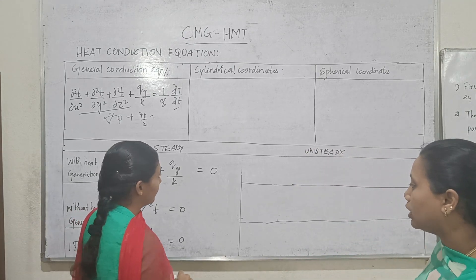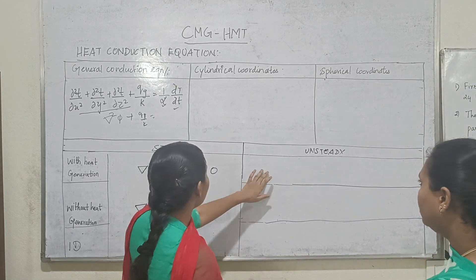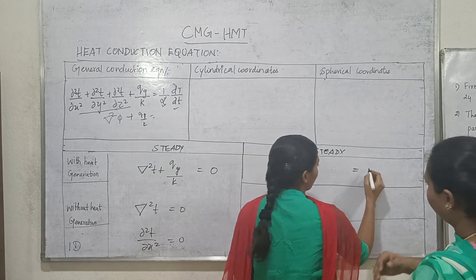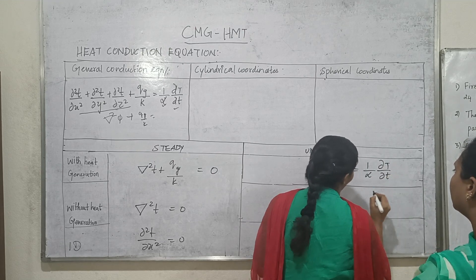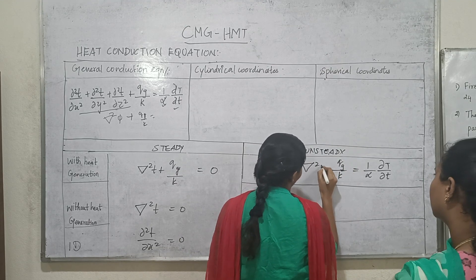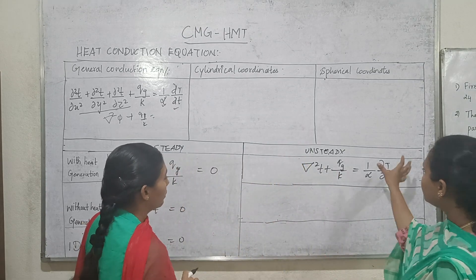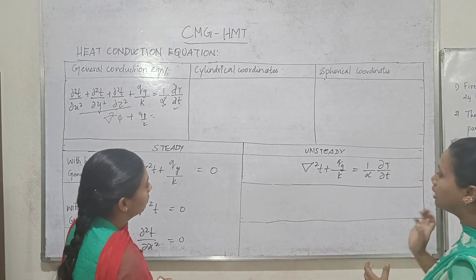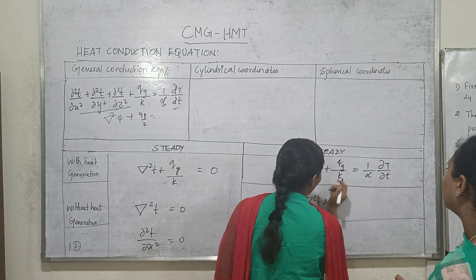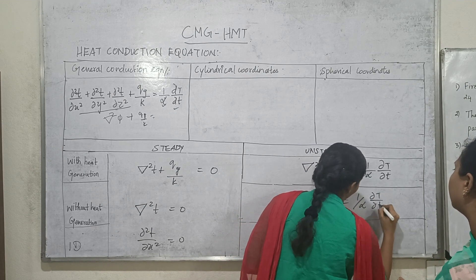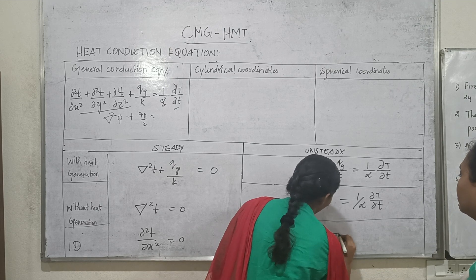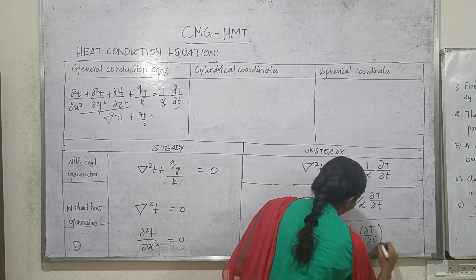With one-dimensional equation without heat generation: ∂²T/∂x² and then we come to unsteady without heat generation. For unsteady, the temperature variable appears: 1/α · ∂T/∂t. With heat generation Q/k, we go to the last condition: del²T + del²T = 1/α · ∂T/∂t.